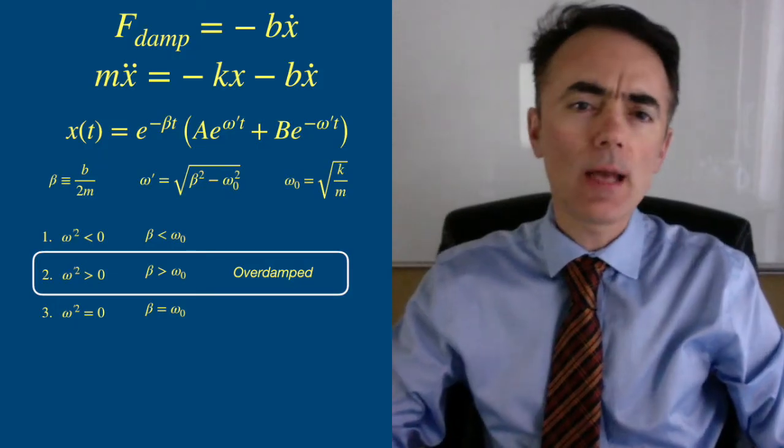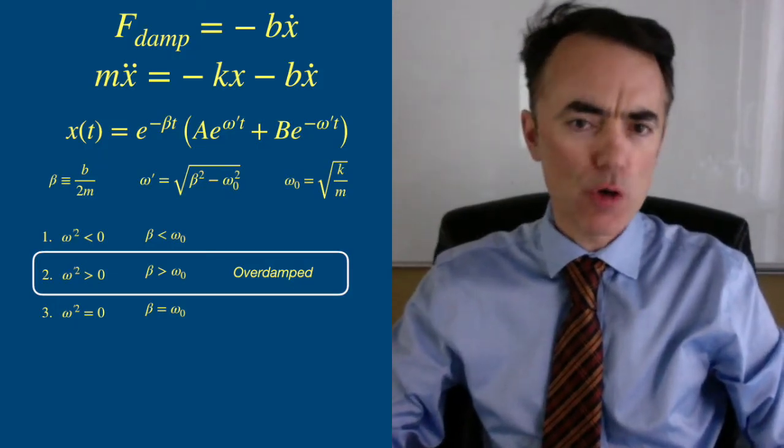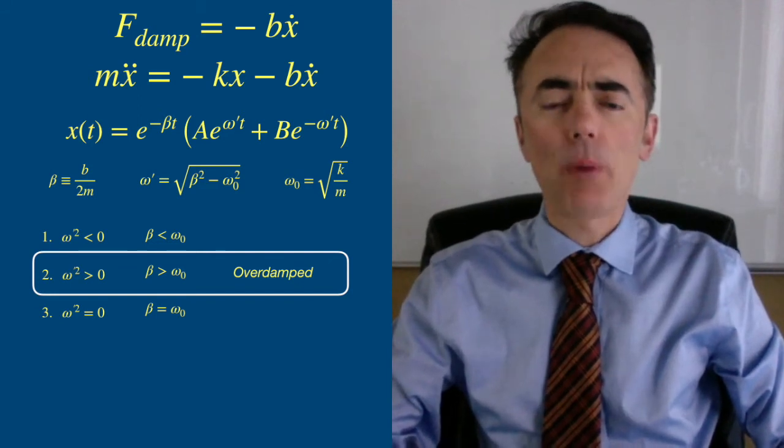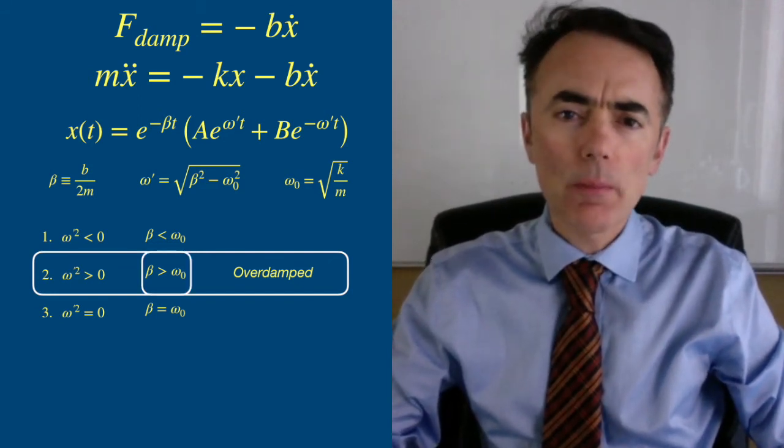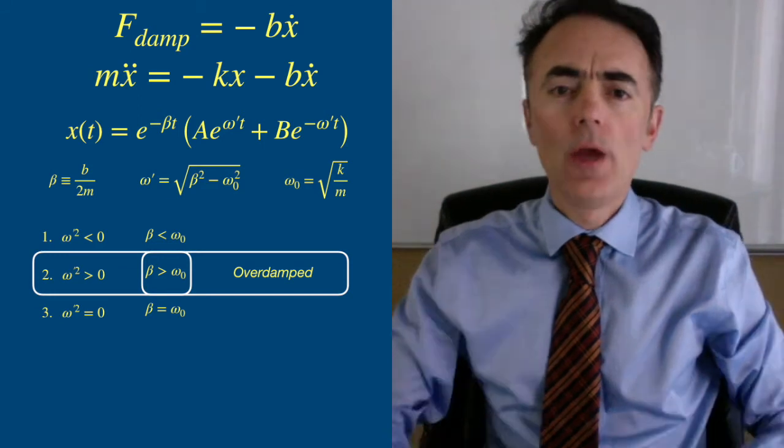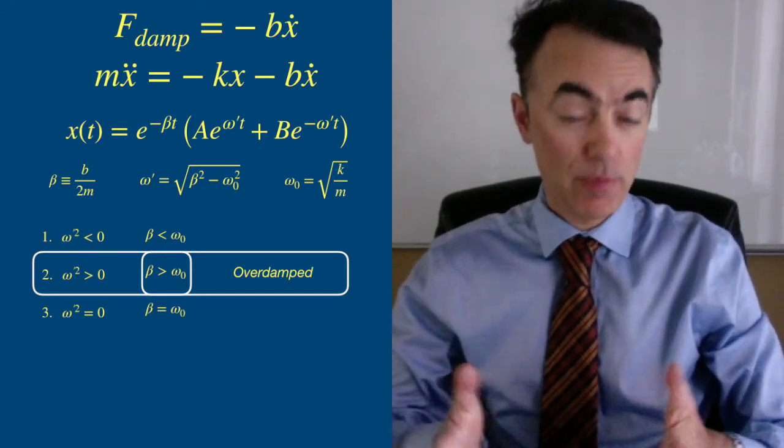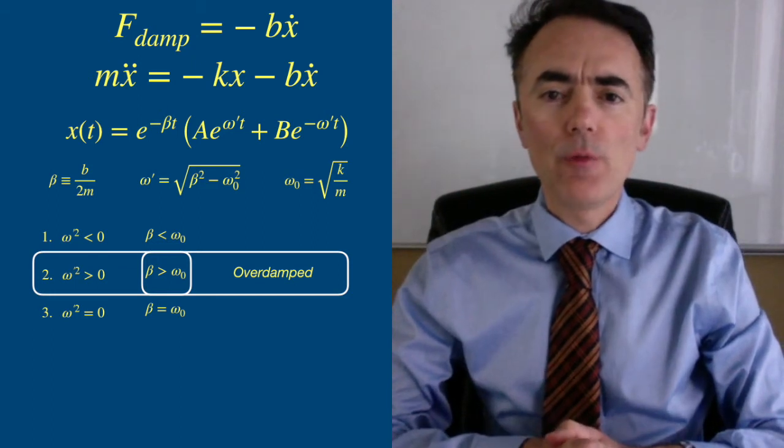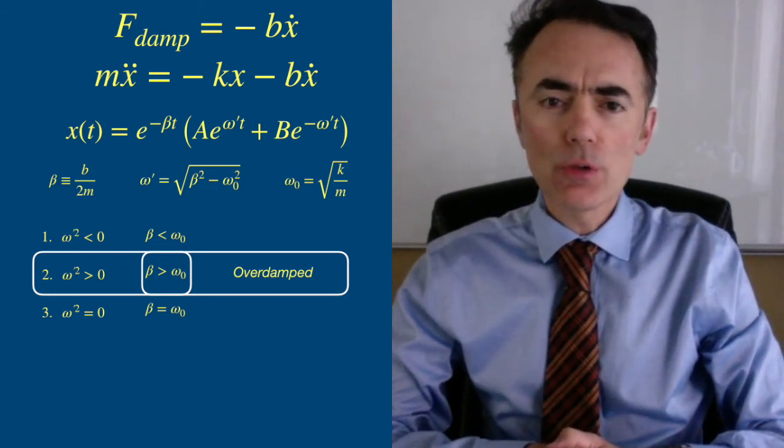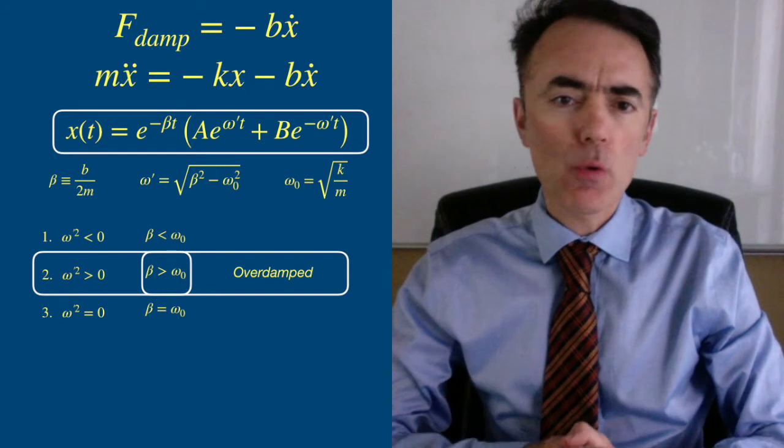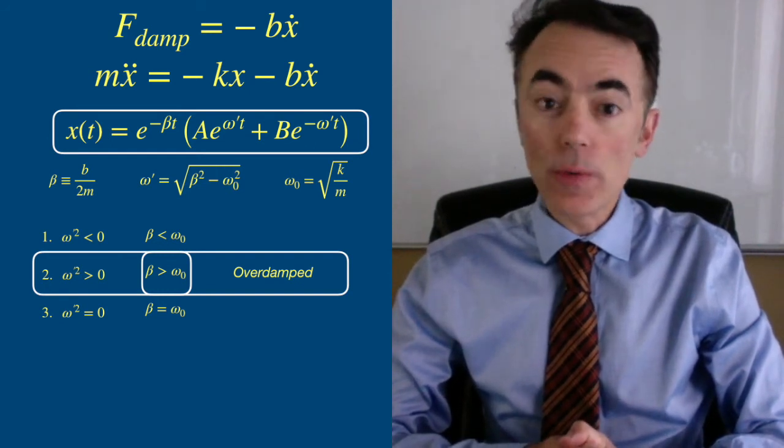Let's study now the overdamped harmonic motion, when omega prime squared is positive. This implies that beta is greater than omega naught. Here we have that the damping term is more relevant than in the previous case. If we go back to the general solution now, we see that omega prime squared is positive, so the exponents are real.